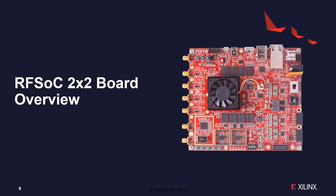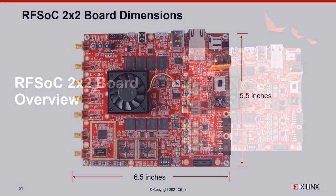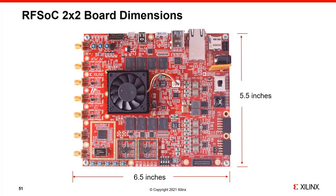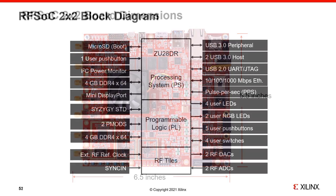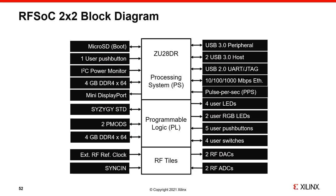Here is the first glimpse of the RFSOC 2x2 board. The board is approximately 6.5 inches by 5.5 inches, considerably smaller than the ZCU111 kit, and is a good choice for senior undergraduates, project students, graduate students, and researchers in areas like communications, instrumentation, and physics. A simplified block diagram of the RFSOC 2x2 shows the three main subsystems of the ZU28DR on the board — the PS, the PL, and the RF tiles — along with the main external interfaces to each of those three blocks.